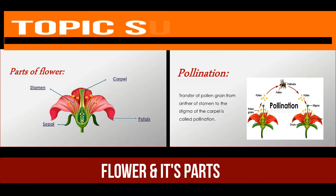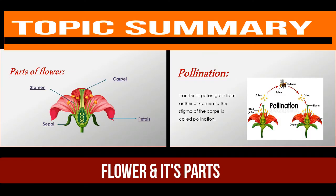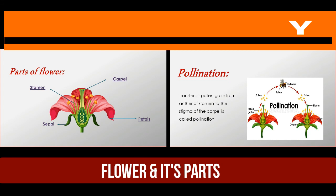So the flower has four main parts: sepal, petals, stamens, and carpel. And pollination is the process of transferring pollen grain from the anther of the stamen to the stigma of the flower.